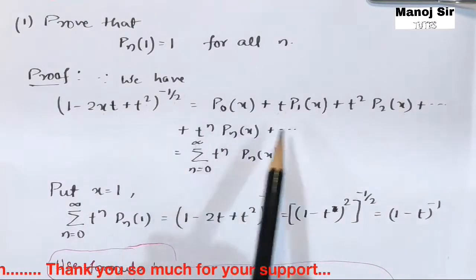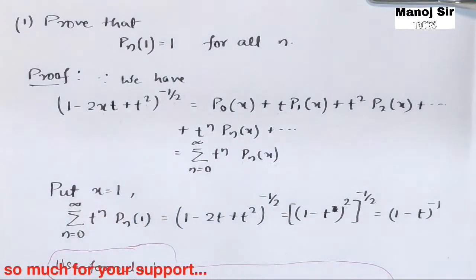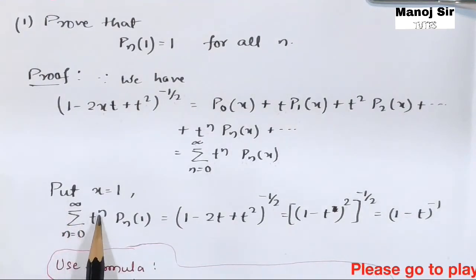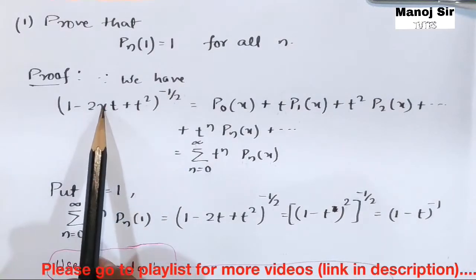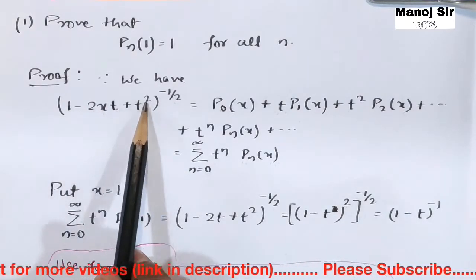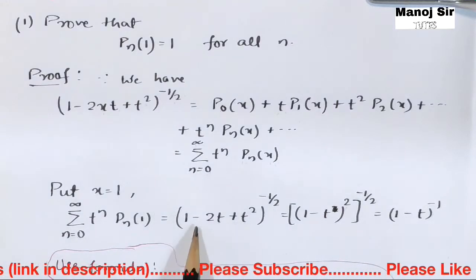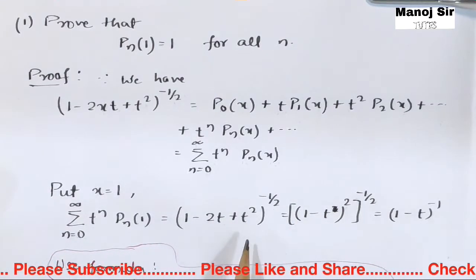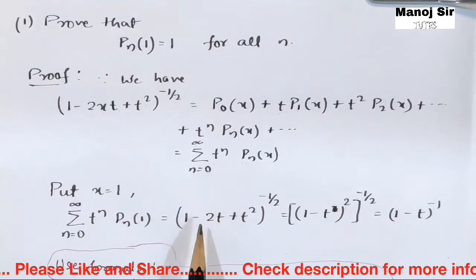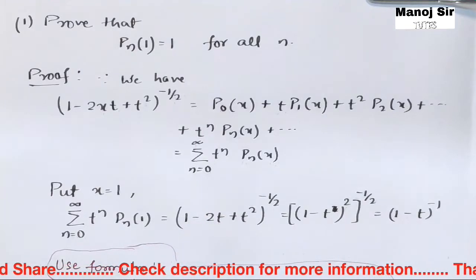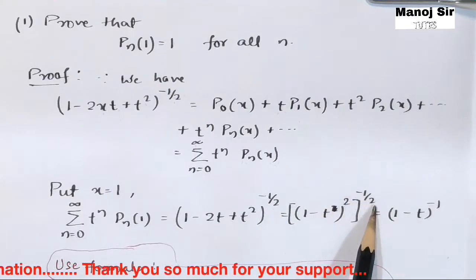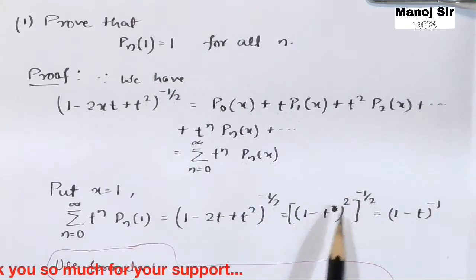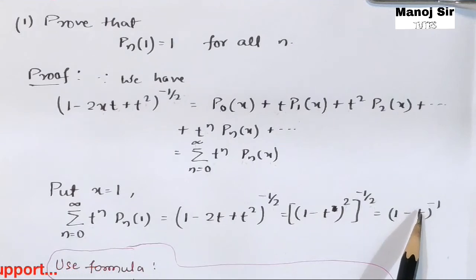Now we need to put x=1. Substituting x=1 gives summation from n=0 to infinity of T^n·P_n(1), which equals (1 - 2T + T²)^(-1/2). This expression is (1-T)², so it simplifies to (1-T)^(-1).